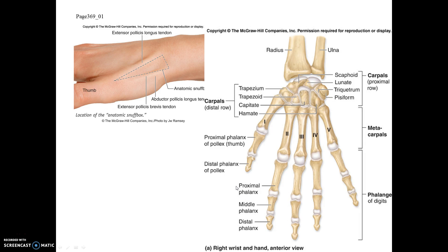This concludes the discussion of chapters 8 and 9 relative to the upper limb, ending with several injuries for closer review. We'll move on to the next recorded lecture on chapter 6, which covers bone and cartilage.